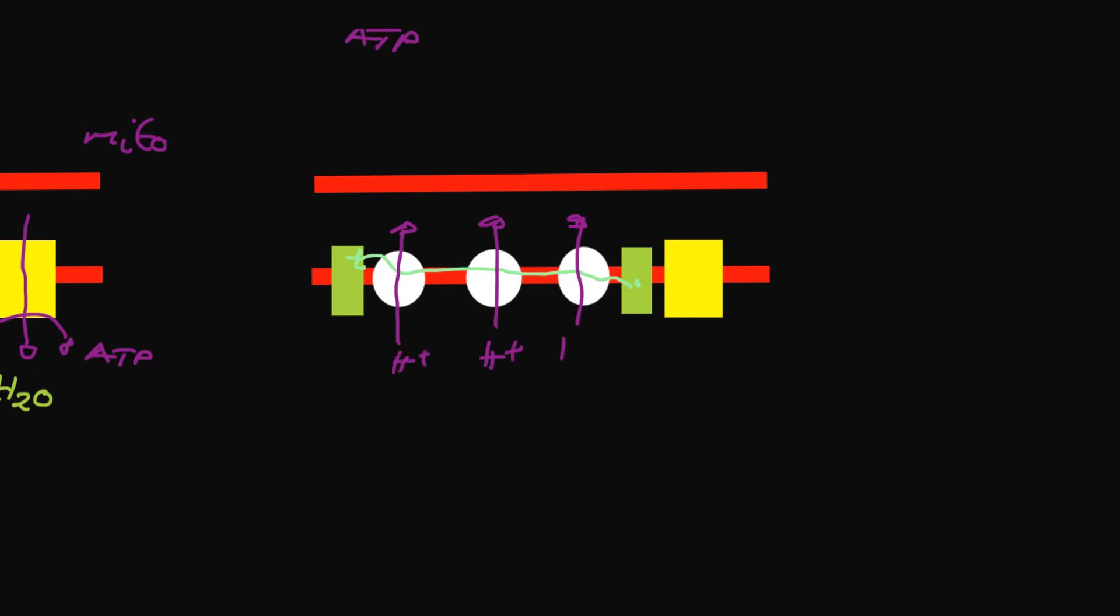The electron that gets to the final photosystem, which is photosystem 1, goes from photosystem 2. That electron is going to join to a carrier molecule called NADP and that's going to be reduced to NADPH, which then gets used in the Calvin cycle.